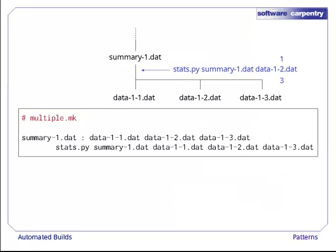Let's start with the case of three files data11.dat, data12.dat, and data13.dat. As we said at the end of the previous episode, it's easy to write a make rule to update summary1.dat whenever any of these, or the stats.py script, changes.